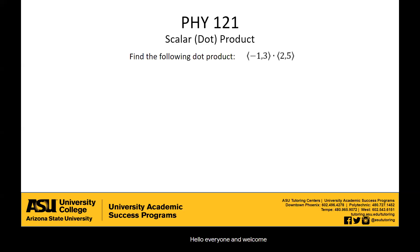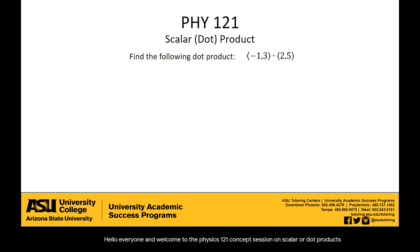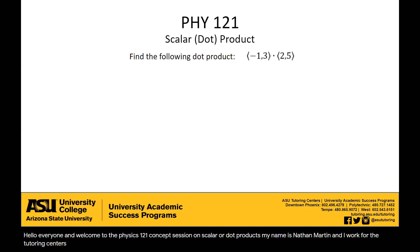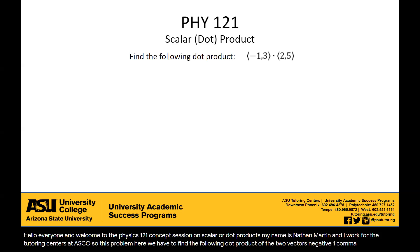Hello everyone, and welcome to the Physics 121 concept session on scalar or dot products. My name is Nathan Martin, and I work for the tutoring centers at ASU. So this problem here, we have to find the following dot product of the two vectors negative 1 comma 3 and 2 comma 5.